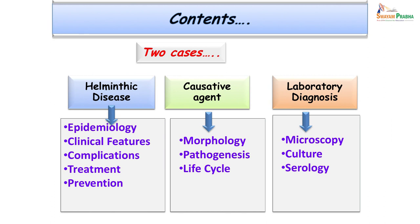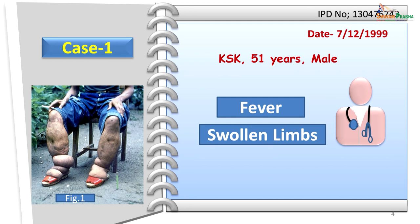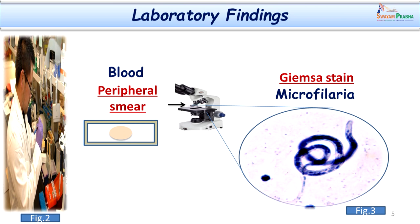Let us take two case scenarios which will help us understand better. The first case: this man came to us with a history of swelling of the limbs which was gradual and progressive over the years, resulting in disfiguration and huge swelling of the lower limbs. He also initially had fever with chills. We collected his blood sample at night around 1 o'clock, made a peripheral smear, and stained it with Giemsa stain. We could see sheathed microfilariae in the peripheral smear, with the sheath clearly covering this larval form.